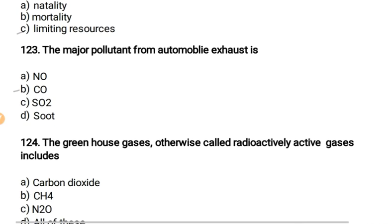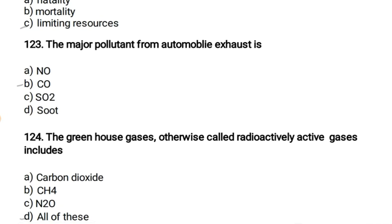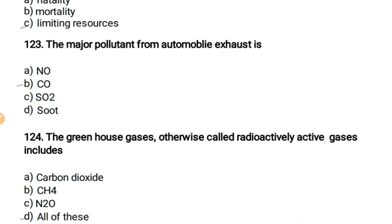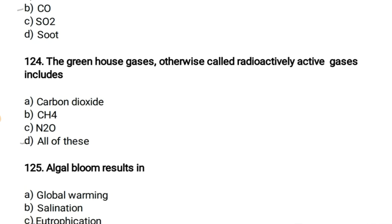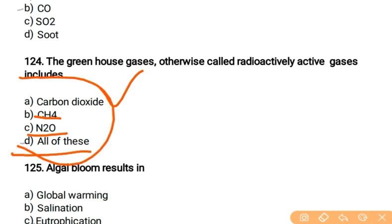The major pollutant from automobile exhaust is carbon monoxide. We use carbon-based petroleum or hydrocarbon-based diesel, so our waste is mainly carbon dioxide — but carbon monoxide is the right answer here. The greenhouse gases, otherwise called radiatively active gases, include carbon dioxide, CH4, and nitrogen oxide — all of these are greenhouse gases.